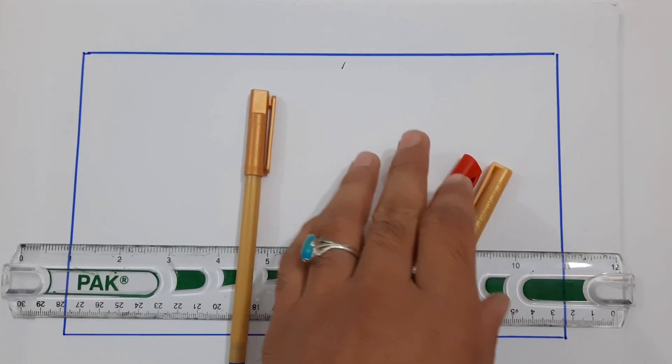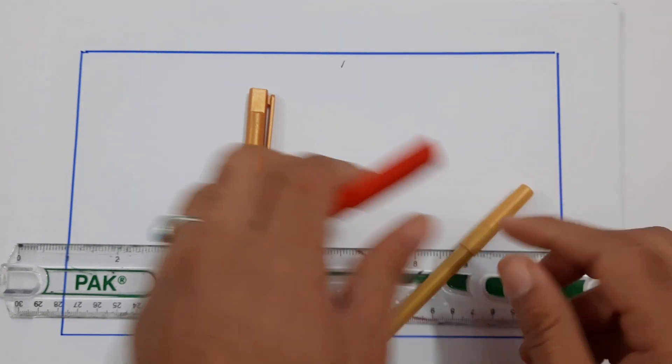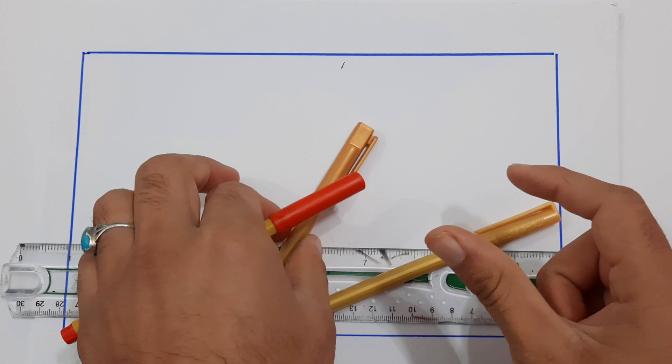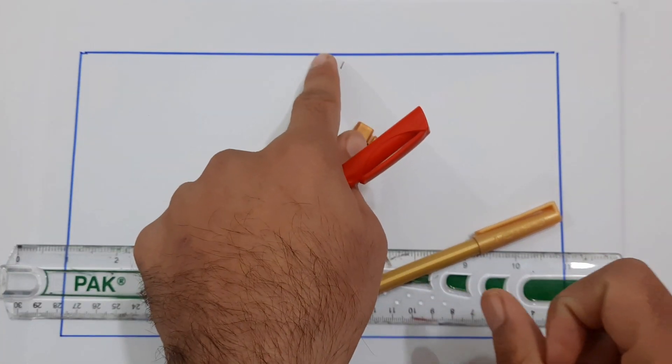House planning step by step. Assalamualaikum guys, I hope everybody will be fine. Today in this short video lecture I will guide you step by step how to make a house plan with dimensions of 18 by 30 feet.